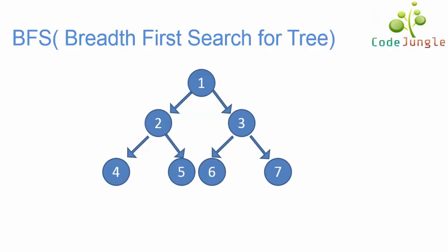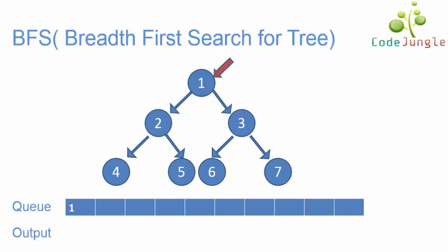We have another video for breadth-first search for graphs — the link is given below in the description box. To begin with, we have a tree and we start with the root node. As one is the root node, one has been pushed into a queue. We check if the first element, one, has any child elements. Since one has children two and three, nodes two and three are pushed into the queue and one is taken out to display in the output.